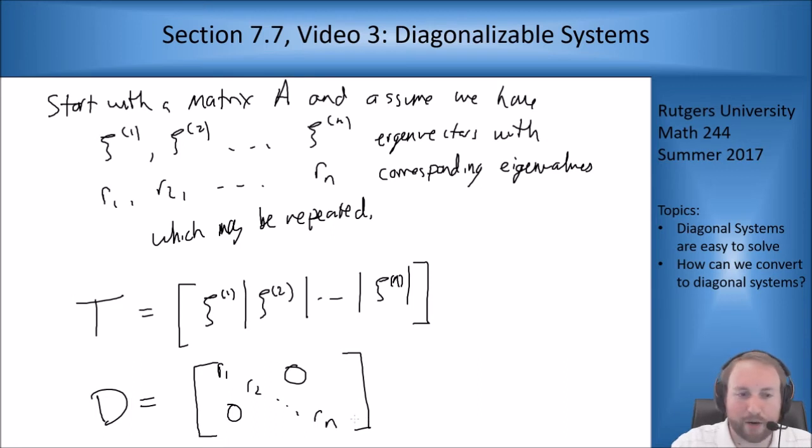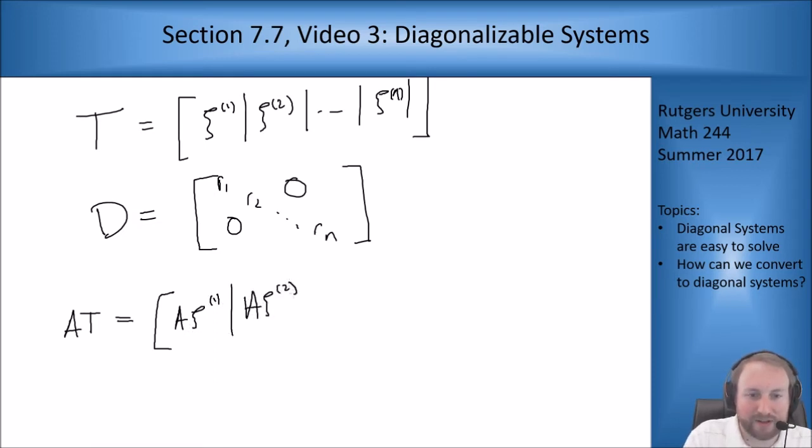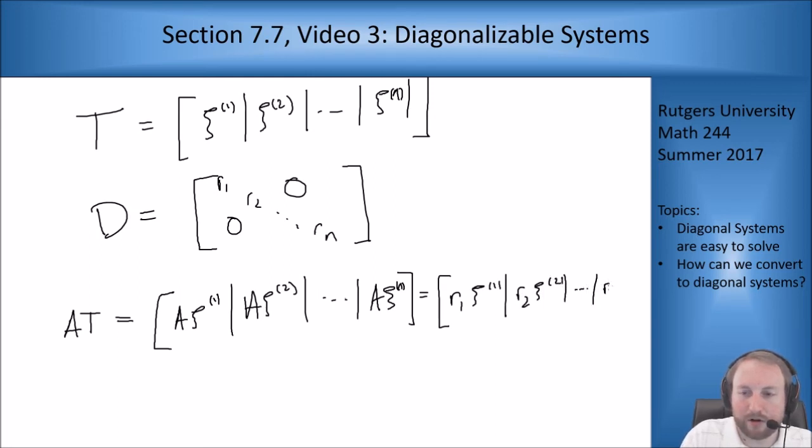Now I want to calculate two products: A times T and T times D. What is A times T? Well, how do I compute matrix products? I take rows of A, multiply them by columns of T. What it ends up doing is that it ends up being A times C1 in the first column, A times C2 in the second column, up to A times Cn in the last column. But I assumed these guys were all eigenvectors, and C1 is an eigenvector of eigenvalue R1. So this is R1 times C1, R2 times C2, and so on, to Rn Cn.